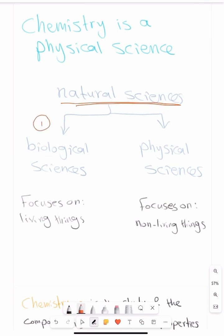Number one, biological sciences. Number two, physical sciences. So what is the difference between biological sciences and physical sciences? From their name you'll know that biological sciences they focus on only living things. On the other hand physical sciences they focus on non-living things. That's the difference between the two types of sciences.